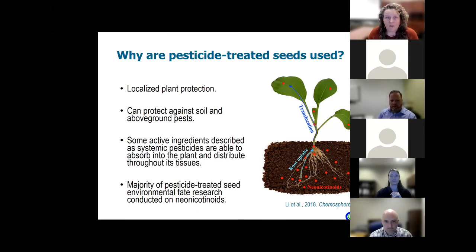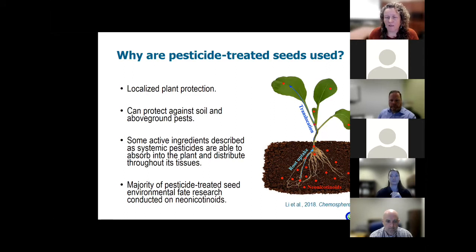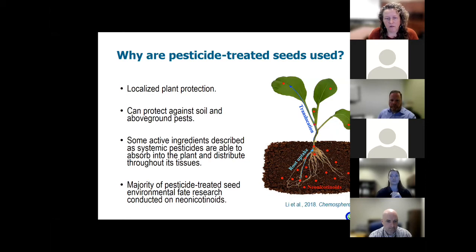Why are pesticide-treated seeds used? They can provide localized plant protection and protect against both soil and above-ground pests. Some active ingredients described as systemic pesticides are able to absorb into the plant and distribute throughout its tissues. This is shown through an image from Leodol in Chemosphere 2018. Neonicotinoids, which are a class of systemic pesticides, are taken up by the roots and translocated into the plant tissues where they can provide additional protection. The majority of pesticide-treated seed environmental fate research has been conducted on neonicotinoids, likely due to high proportion of cereals, oilseeds, and cotton utilizing seed treatment products in the Midwest.